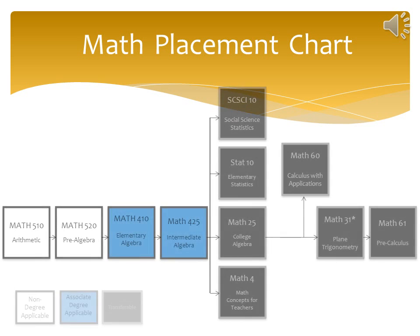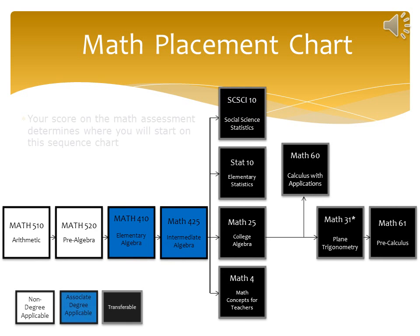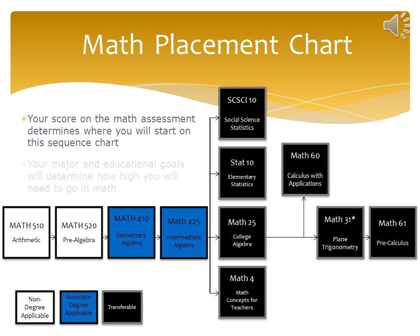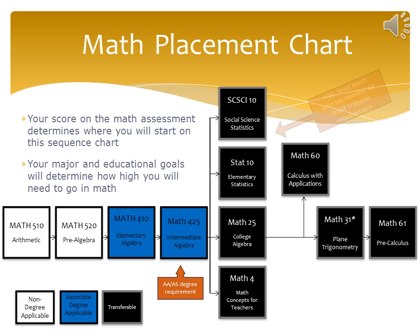Here is our math placement chart. Your score on the math assessment determines where you will start on this sequence chart. Your major and your educational goals will determine how high you will need to go in math. For example, students looking to attain an AA or AS degree have a minimum math requirement of Math 425. Students looking to transfer have a minimum math requirement of a 1-through-99 level math course. The highest math class you can place into is Math 61.